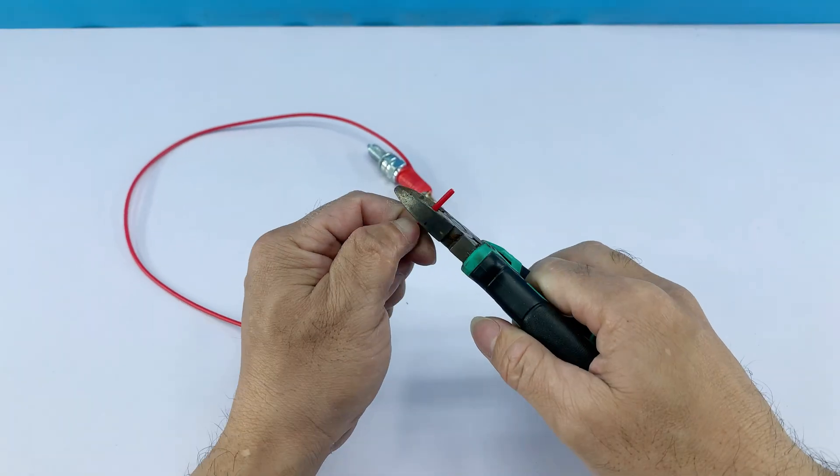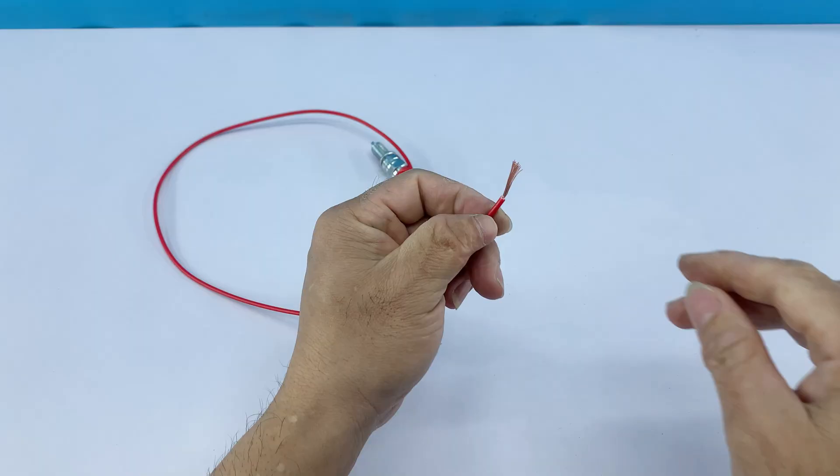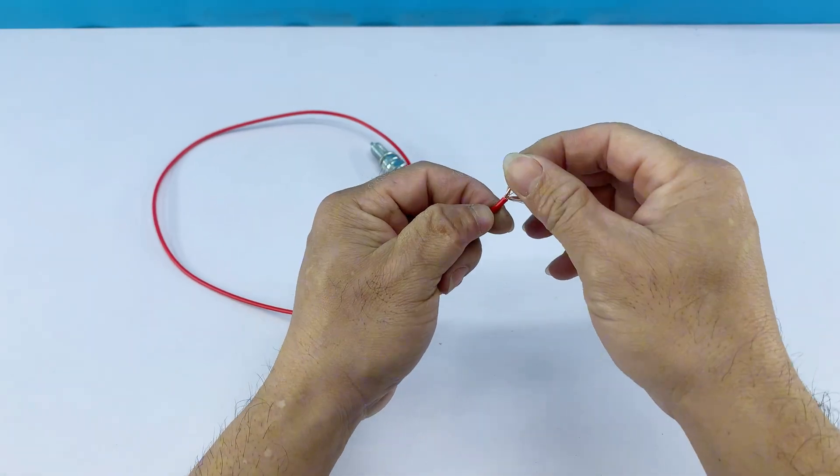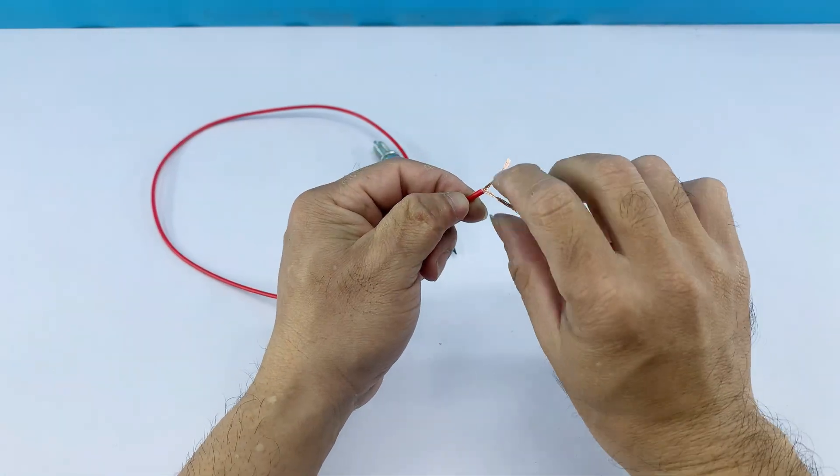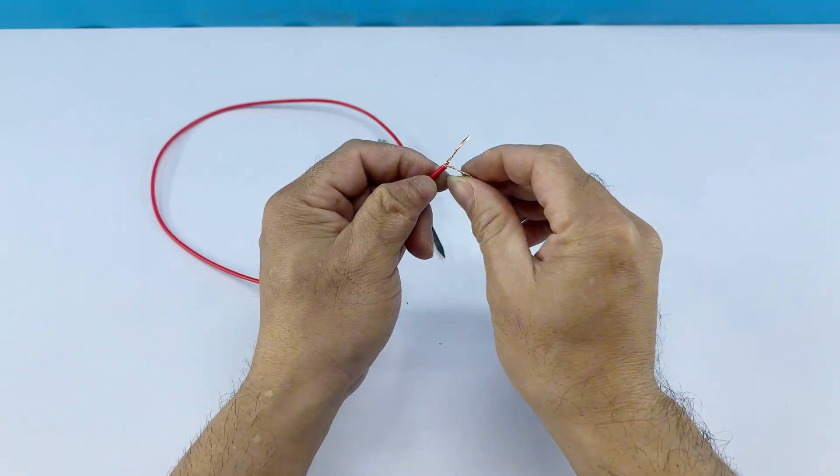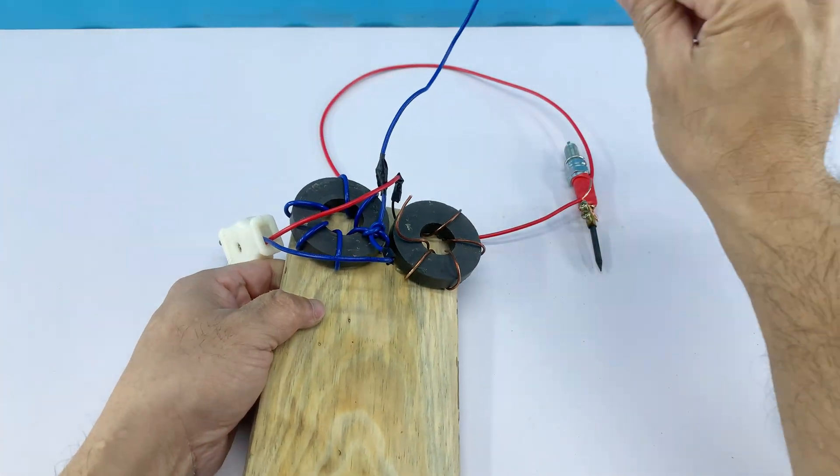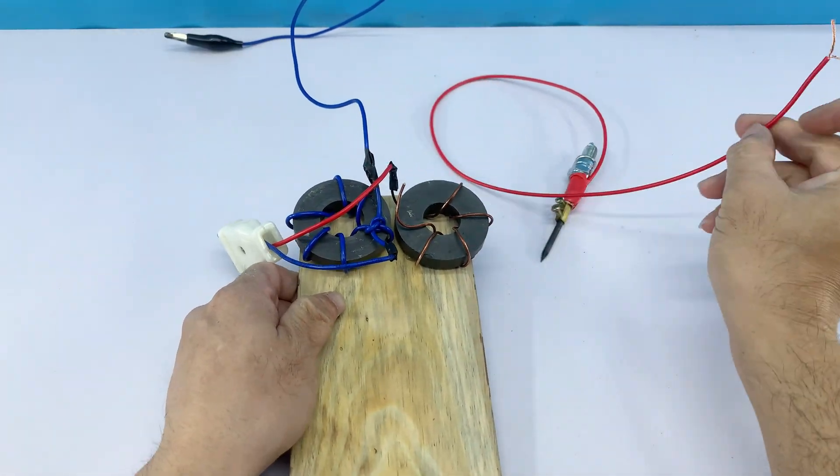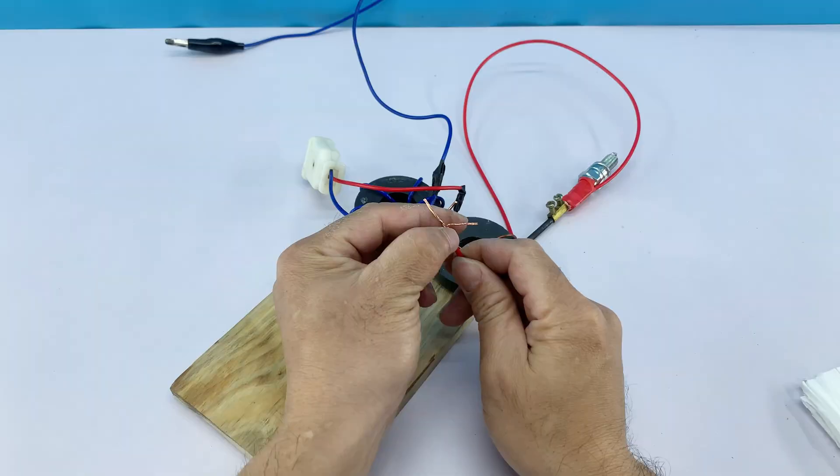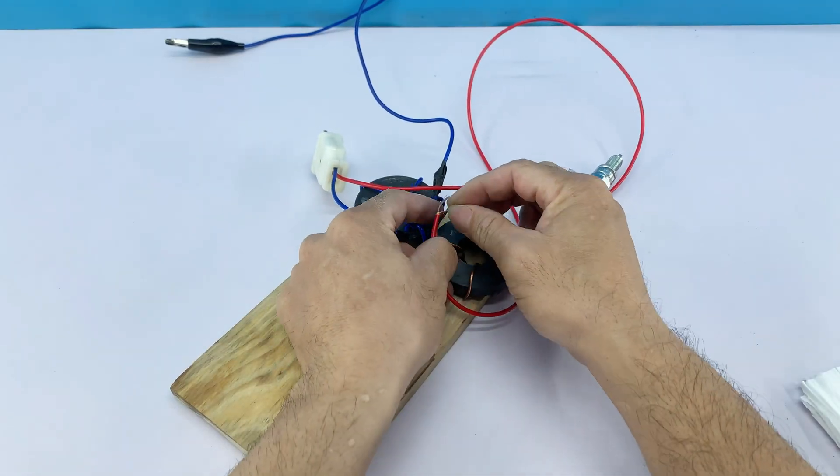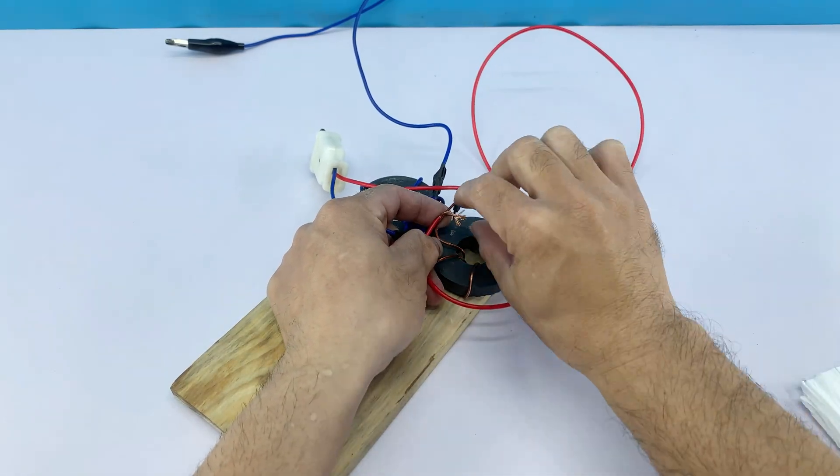With the other end of the red wire, I stripped off the insulation to expose the copper core inside. Then I connected the red wire to the remaining copper wire on the ferrite core and secured it firmly.